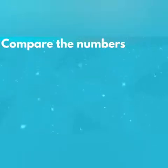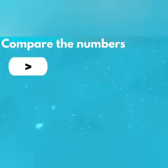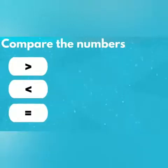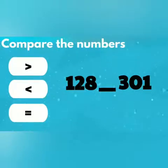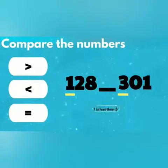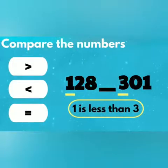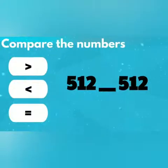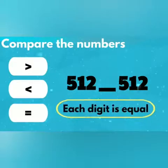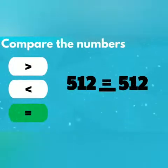Let's practice by comparing more numbers. Fill in the blank with either greater than, less than, or equal. Number 1: 128 and 301. In the hundreds place, 1 is less than 3, so the answer is less than. Number 2: 512 and 512. Each digit in corresponding place values is equal, so the answer is equal to.